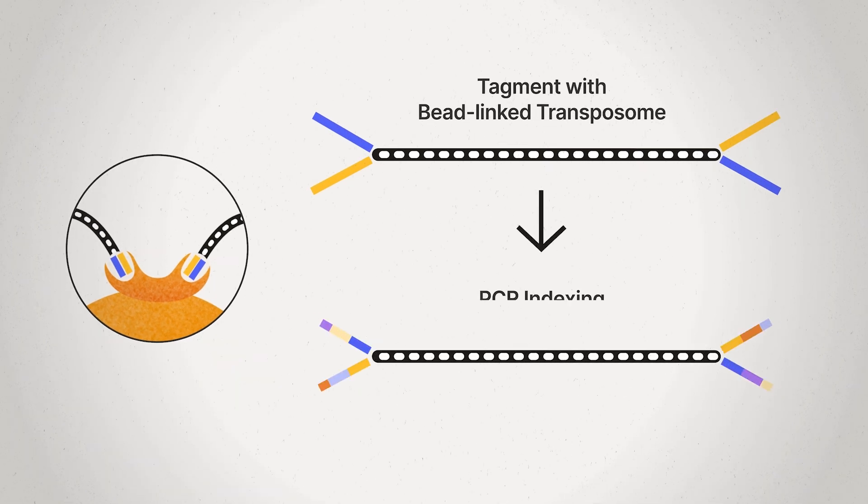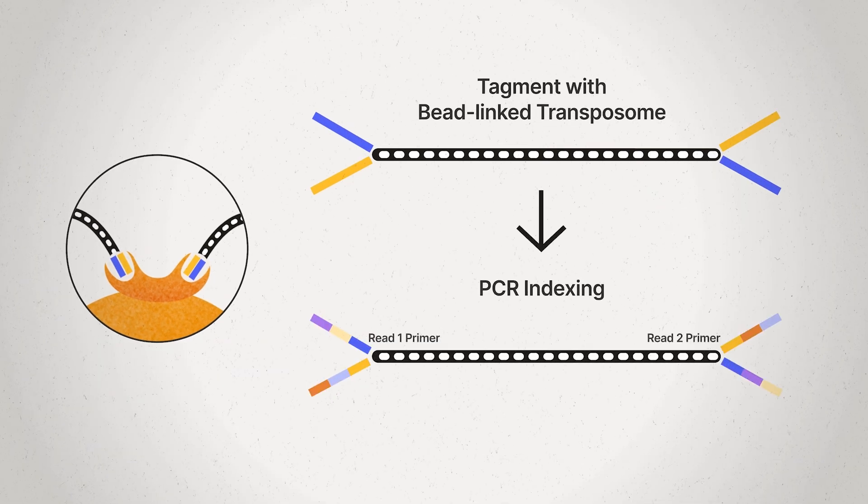In indexed PCR, we are adding our indexed primers to the tagmented amplicons for later demultiplexing and sequencing.